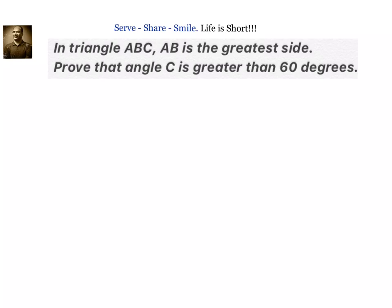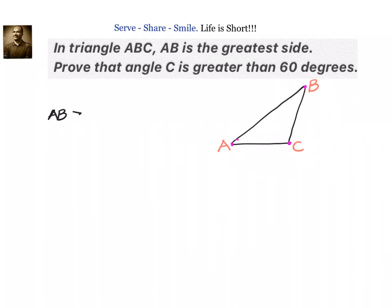We have been given a triangle ABC. Let us try to draw the triangle. We have a triangle in which AB is the greatest side. That means we know that AB is greater than the other two sides. So we can write down AB is greater than AC, and also AB is greater than BC.